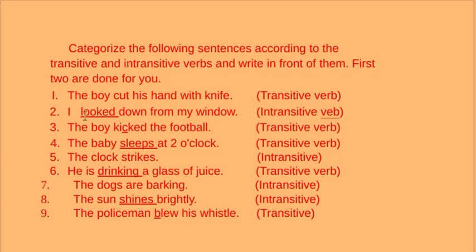The boy kicked the football — this is a transitive verb. 'The boy' is the subject, 'kicked' is the verb, and 'the football' is the direct object. The baby sleeps at two o'clock — this is a transitive verb because 'the baby' is the subject, 'sleeps' is the verb, and the object is 'two o'clock.'